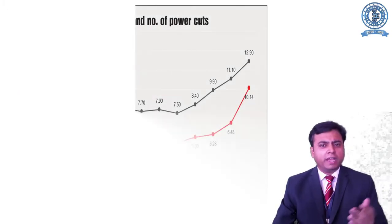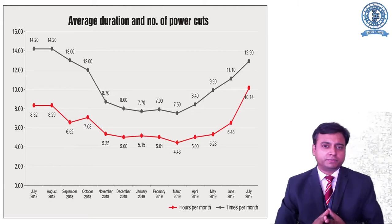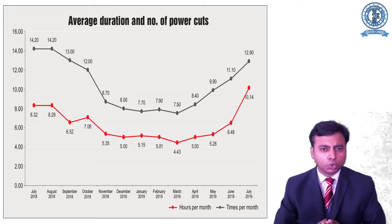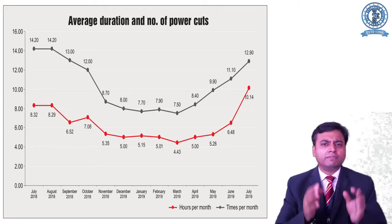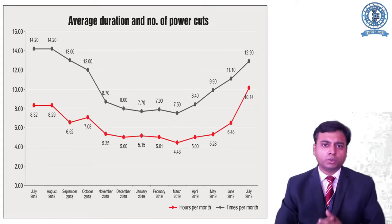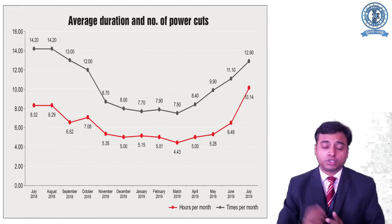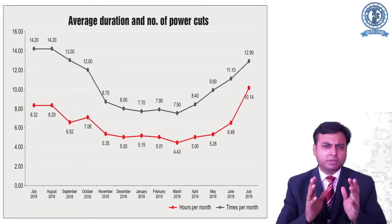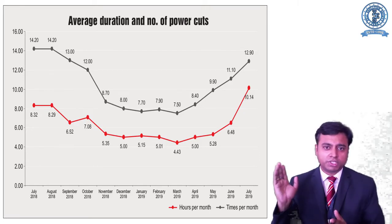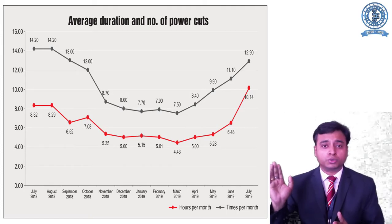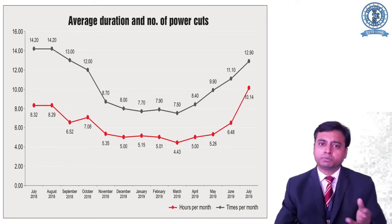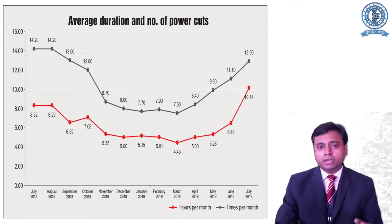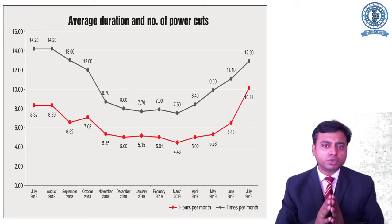Moving ahead, there is again a basic problem: the number of power cuts. Have you never faced a power cut in your home? Definitely yes — you would have faced a power cut at some point, whether in a week or a month. There is a graph shown here for the year 2019, depicting how many hours there was no power during that particular time. My intention is to let you know that these are basic problems with the power you are getting, and this is how I can say the quality of power is not good.